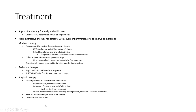Supportive therapy is used for early and milder cases, with observation of vision impairment. More aggressive therapy is indicated for patients with severe inflammation or optic nerve compromise. Medical therapy includes corticosteroids as first-line therapy, along with adjuvant immunosuppressive therapy.